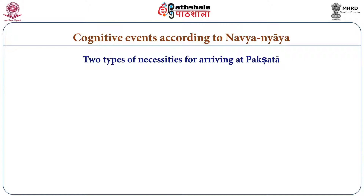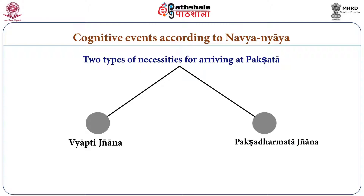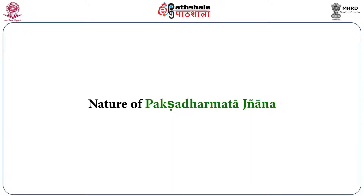There are two necessities in order to have inference. While inferring, we need one thing known as Vyaptic Gyan, and second, Paksha Dharmata Gyan. We have discussed the nature of Vyaptic Gyan in earlier modules. What remains is the nature of Paksha Dharmata Gyan — and this is what is desired now.